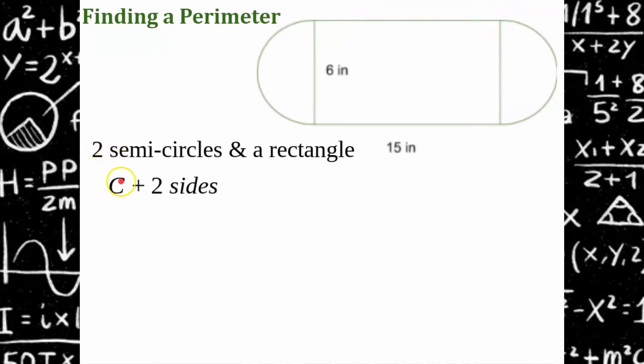I'm going to find the circumference of one full circle because these two semicircles make one circle. One half plus another half and then I have two sides to close it up. So half of a semicircle, one side, half of a semicircle, and another side. A full circle and two sides.